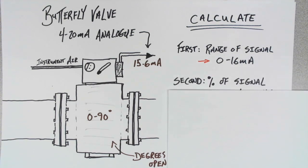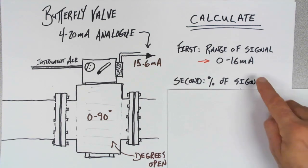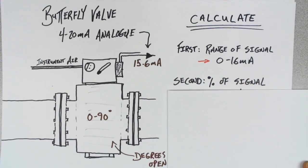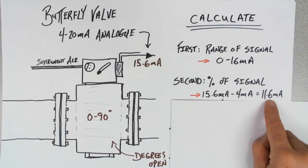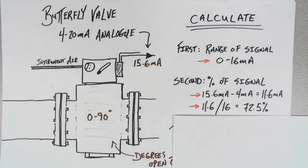The second item we need to calculate is the percent of the signal. Remember, our maximum is now only 16. In order to find the percentage, we're going to have to take our actual value and subtract 4 to bring them both down to the same value. Now that we've done that, we can apply the percentage calculation. 11.6 divided by 16 will give me 72.5%.